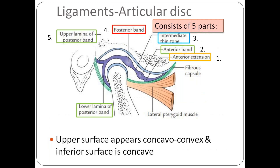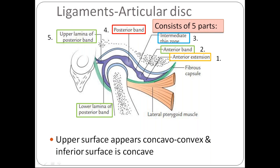The articular disc consists of five parts: anterior extension, which is attached to the fibrous capsule and lateral pterygoid; anterior thick band; intermediate thin zone; posterior thick band; and a posterior band, which divides into upper lamella and lower lamella.